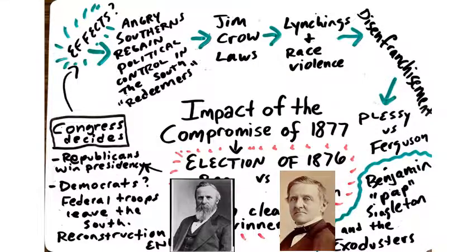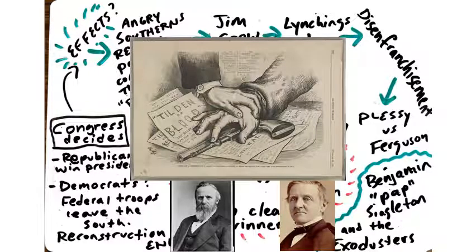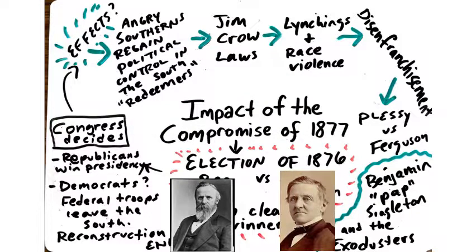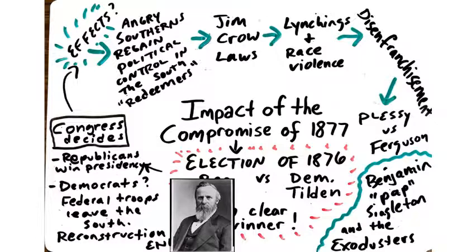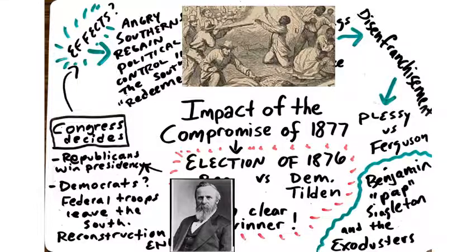What happens is the Republicans get their presidential candidate to win — Rutherford B. Hayes — so Samuel Tilden loses the election. As part of the compromise, the Democrats get the removal of federal troops from the South. We can see a map showing the military districts in the South following the Civil War. Without troops there, Reconstruction ends and Southerners are able to start implementing new laws to repress African Americans, known as Jim Crow laws, with no federal troops to protect them.